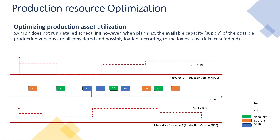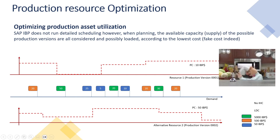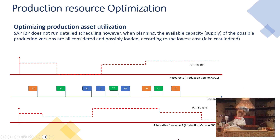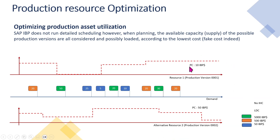Let's discuss the first use case, production resource optimization. In this use case, we've got two production resources, resource one and resource two. One being the alternative resource of the main resource. Why is it main? Because it's cheapest — production cost is cheaper compared to the production cost on the alternative resource.